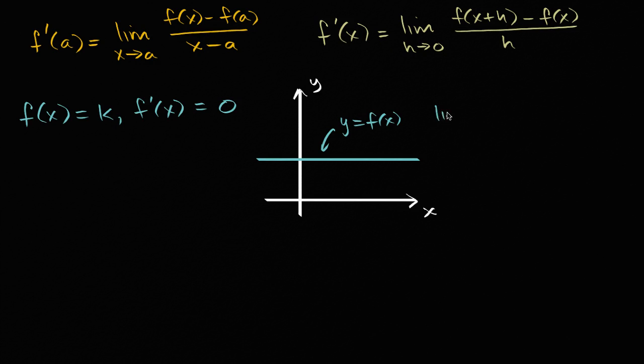The limit as h approaches zero of f of x plus h - well, no matter what we input into our function, we get k, so f of x plus h would be k - minus f of x, well, no matter what we put into that function, we get k - over h.